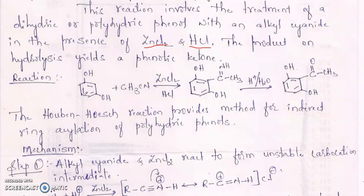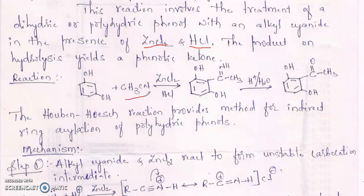We have taken the compound resorcinol — this is a dihydric phenol. This is treated with alkyl cyanide; we are taking methyl cyanide, along with zinc chloride and HCl. This is treated with resorcinol to form an intermediate having a C double bond N-H.